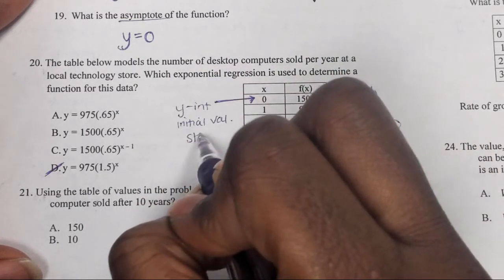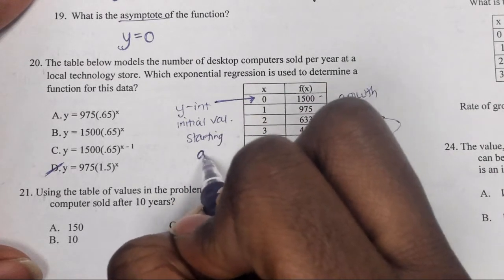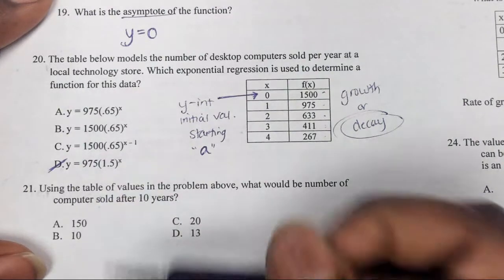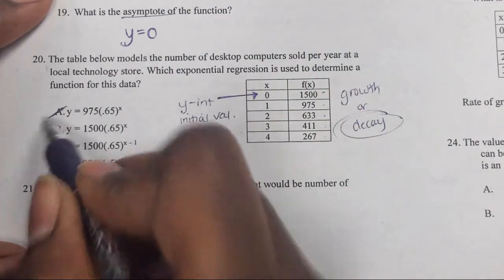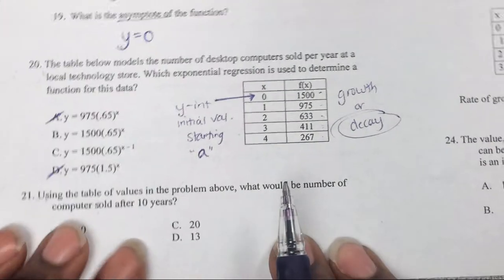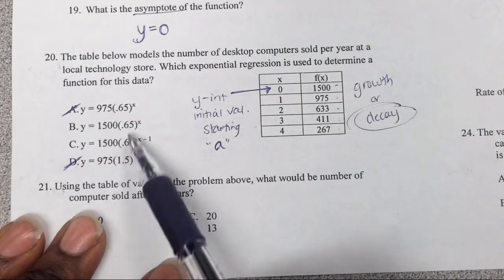So we know that this one cannot be the answer. So what's up with B and C? They look just alike.